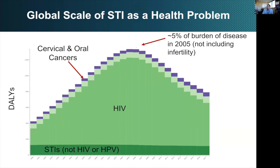This slide shows you the global scale of STIs as a health problem, using data from the Institute for Health Metrics. We're looking at the number of disability-adjusted life years lost associated with different STIs. The daily impact internationally is dominated by HIV infection, with the next largest proportion coming from HPV-associated malignancies — both cervical and oral cancers. At its peak, 5% of the total burden of disease in the world was related to HIV and STIs, and that doesn't even include the impact of infertility.